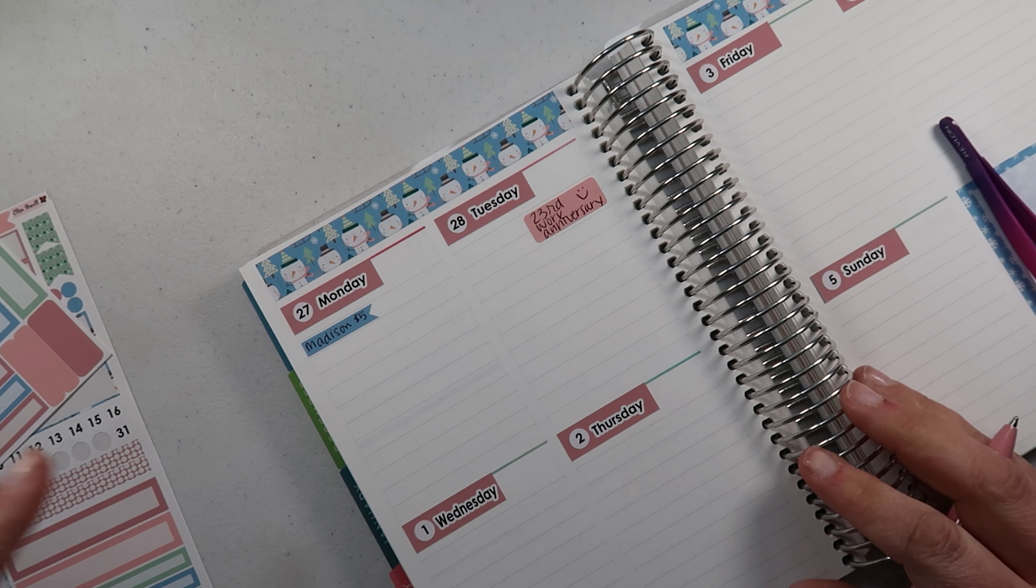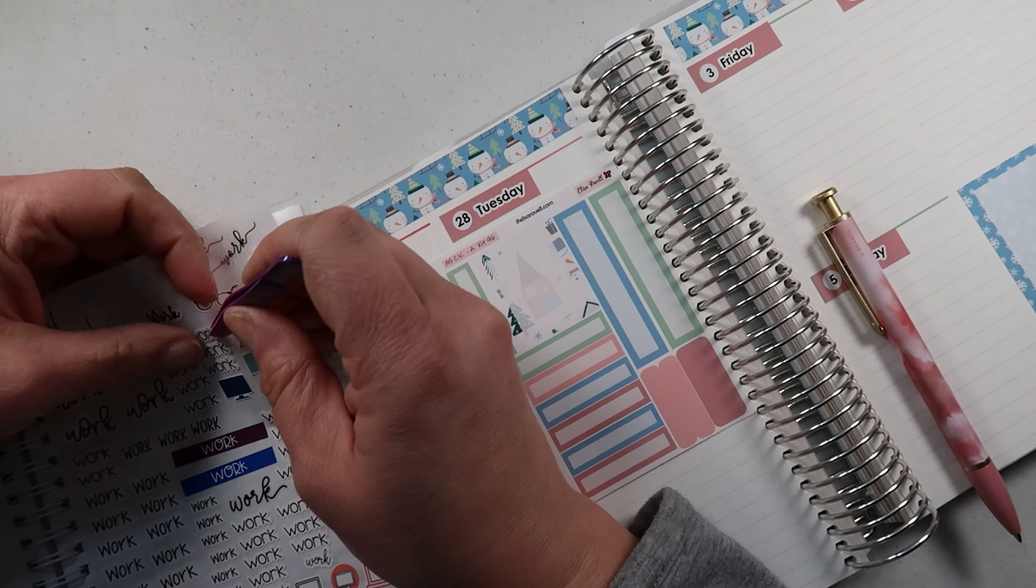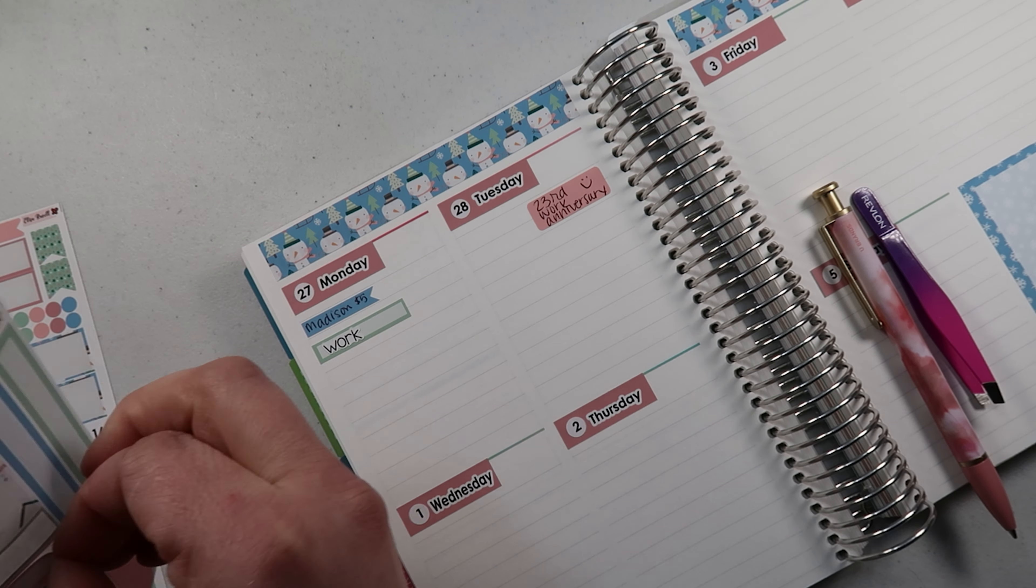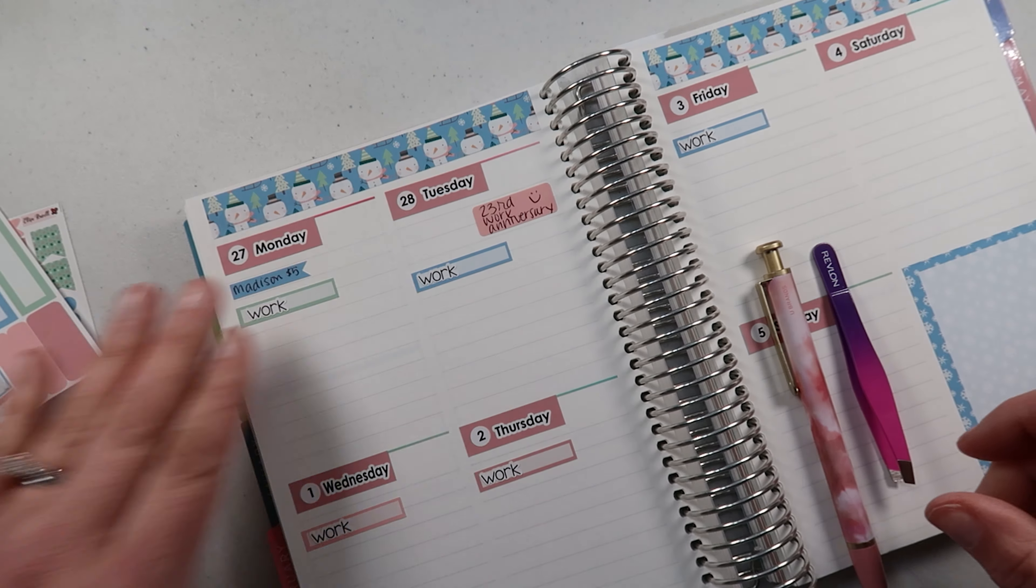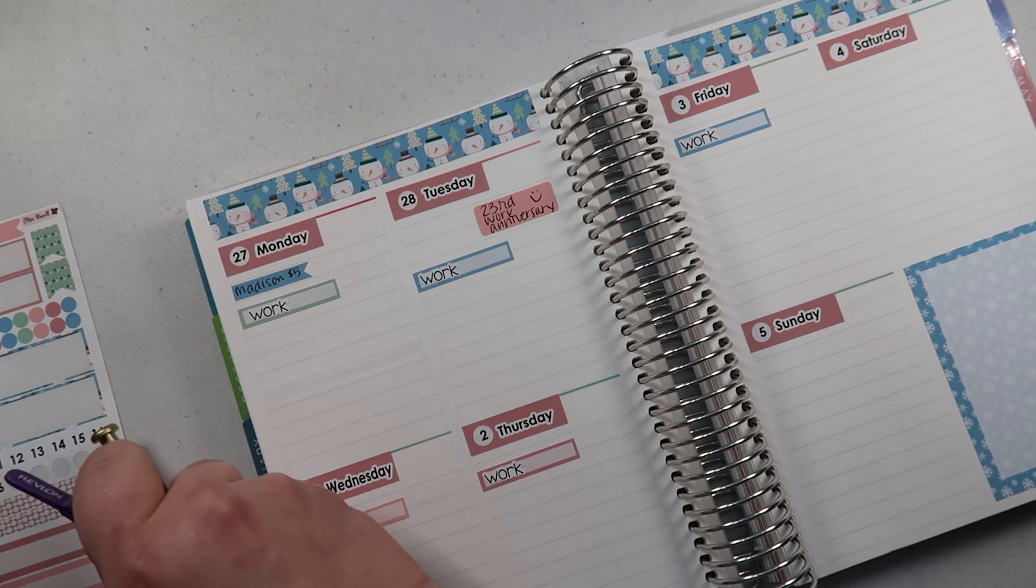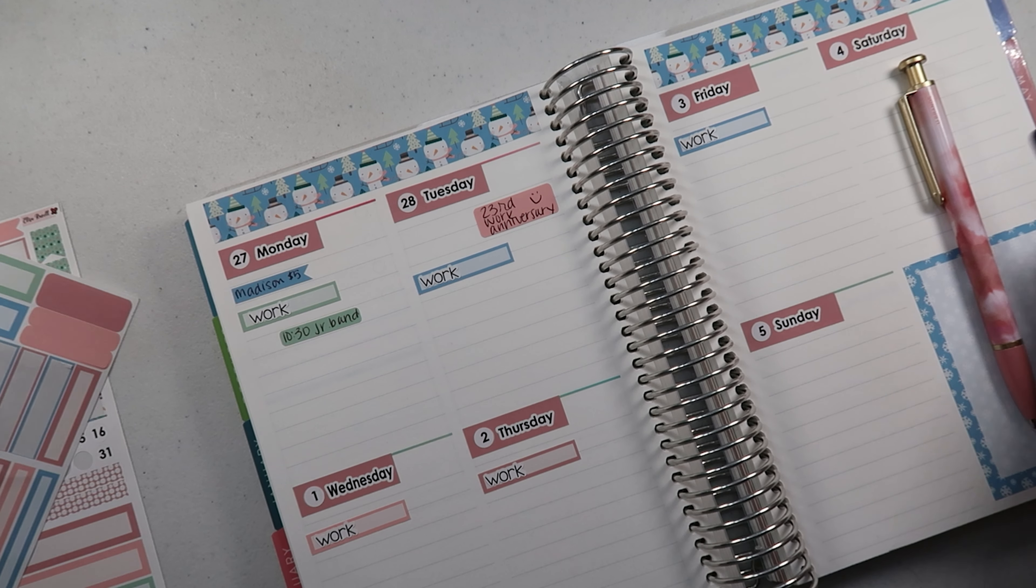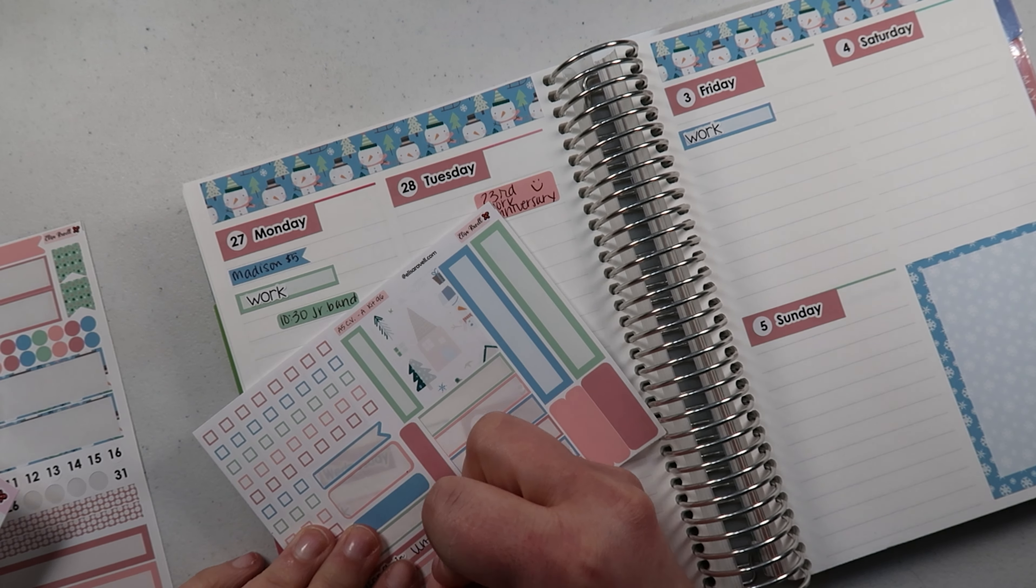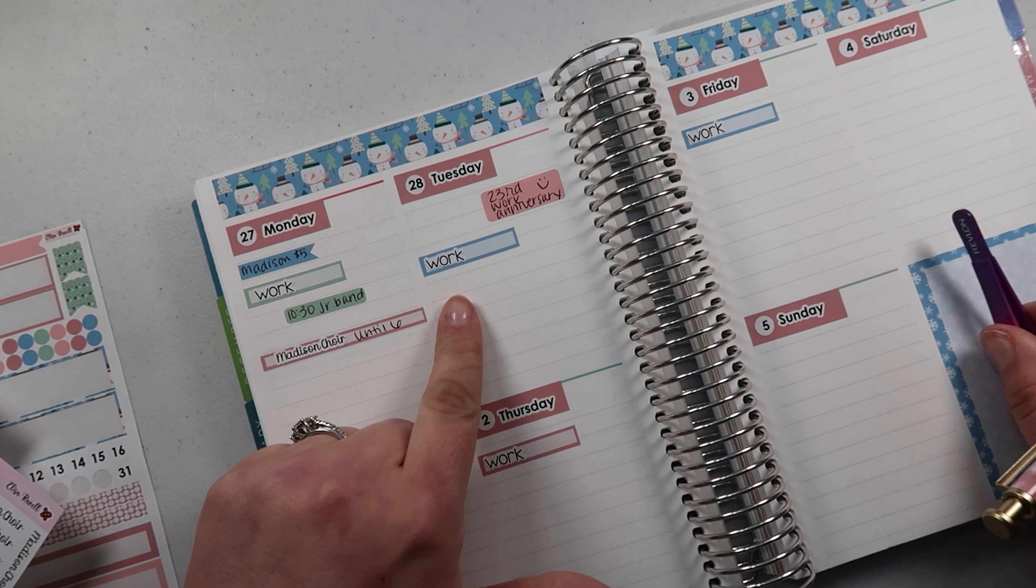And then I need a reminder on Monday that Madison needs five dollars for pizza. Okay, and then Madison has, so I have to work, let's put that in. I'm getting confused here. Okay, got work down for those five days. Then Christopher has band on Monday, so let's put that in, and then Madison has choir there.